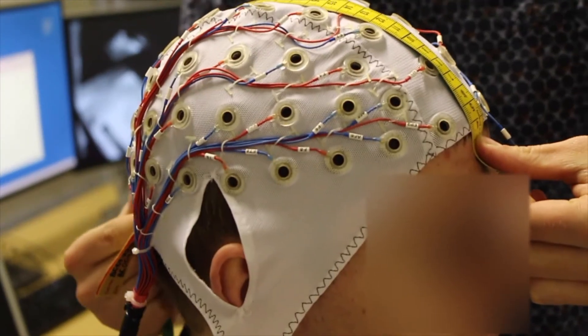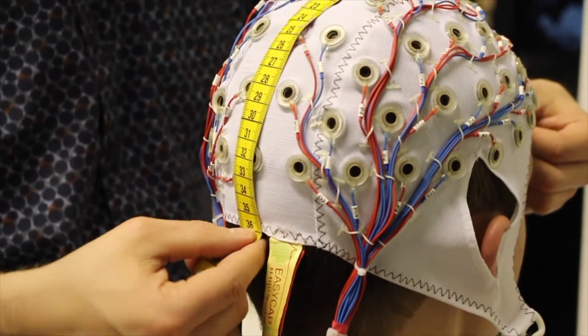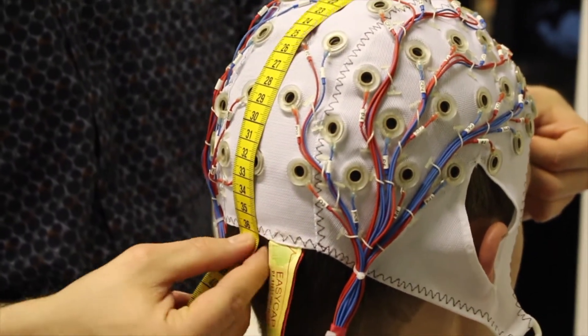Next, you should measure from the nasion, which is between the eyebrows, to the inion, the bump on the back of the skull, and make sure that electrode CZ is at the midpoint of the two.